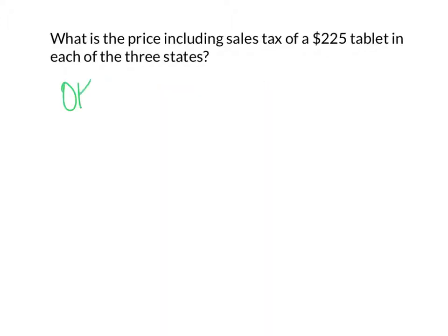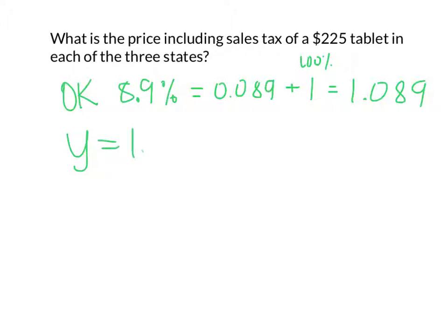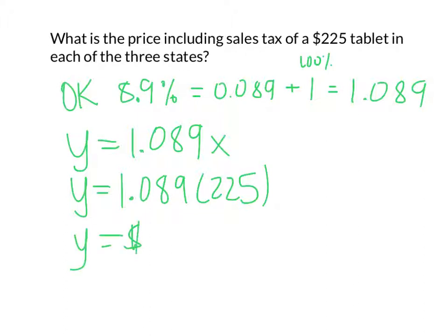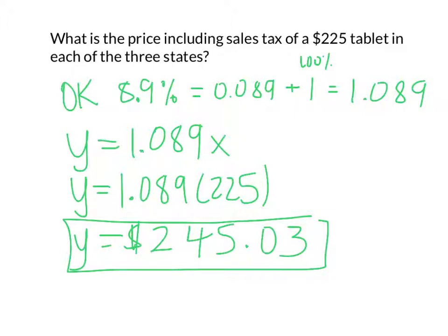And finally, Oklahoma, that had that sales tax of 8.9%. Again, that is decimal form 0.089. And I want to add that to the 100%. And 100% as a decimal is just 1 to give me the 1.089. And then as an equation, the price with sales tax equals 1.089X. So now we substitute in the price of the item, 225. That equals $245 and 25 cents, so it rounds up to 3 cents.